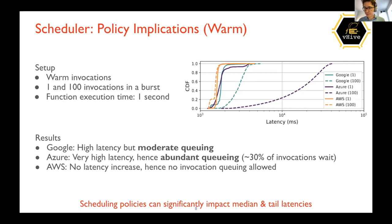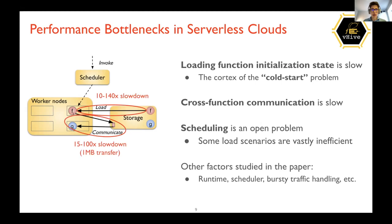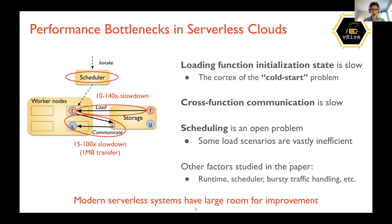Scheduling policies clearly have a big impact and there is much room for improvement. To briefly summarize the state of today's clouds: cold starts are still a big problem despite all innovation; communication is slow with orders of magnitude differences; and scaling issues can destroy not just tail latency but even mean and median latency even in simple cases. More details are in the papers.